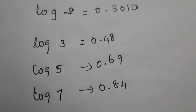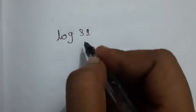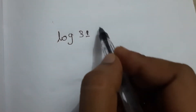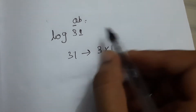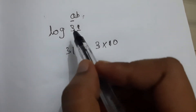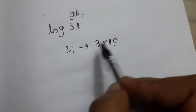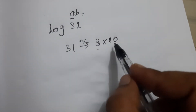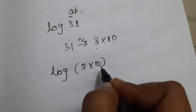Now we will solve an example. Consider log(31). We know the values of log 2, log 3, log 5, and log 7, so we express 31 in the a×b format where a is one of these values. We can approximate 31 as 3 × 10, giving us 30, which is approximately equal to 31. So we take log(3 × 10).